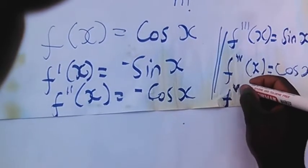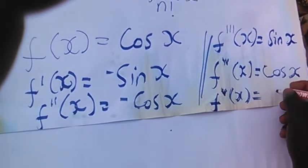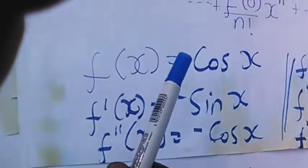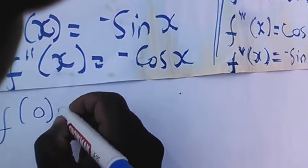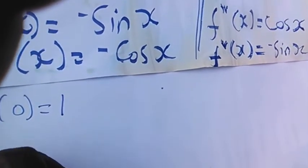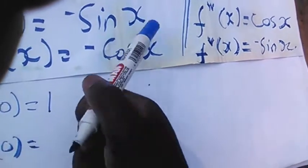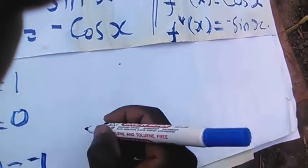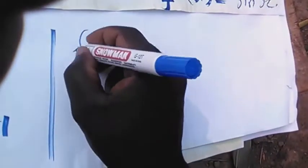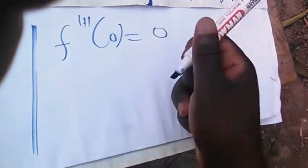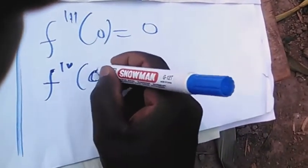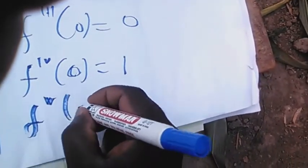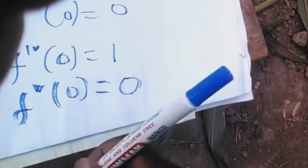When you substitute x equals 0 in each of these functions, we find: f(0) = cos(0) = 1; f prime(0) = negative sin(0) = 0; f double prime(0) = negative cos(0) = negative 1; f triple prime(0) = sin(0) = 0; fourth derivative at 0 = cos(0) = 1; fifth derivative at 0 = 0.